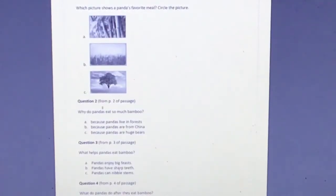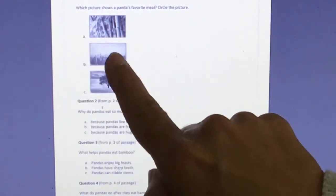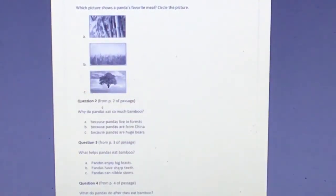Which picture shows a panda's favorite meal? You can circle the picture. Is it A, is it B, or is it C? Which of those pictures shows a panda's favorite meal?